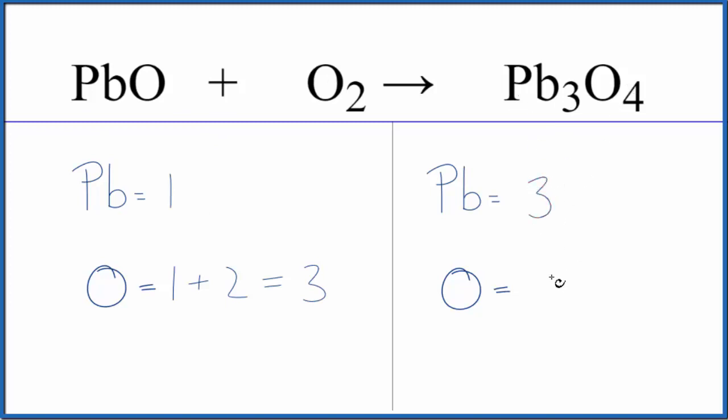Three lead, four oxygen. Let's leave the oxygen till last and balance the lead. If we put a three here on the PbO, we have one times three. That'll give us three of these lead atoms, so those are balanced.